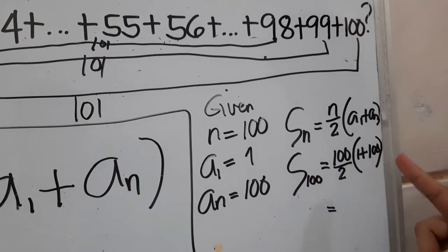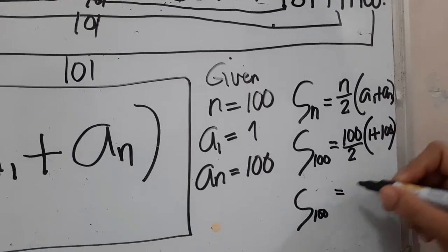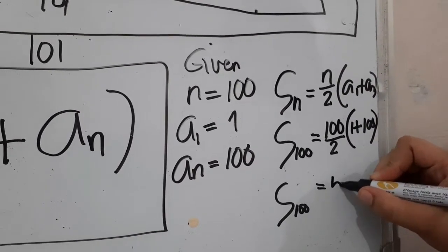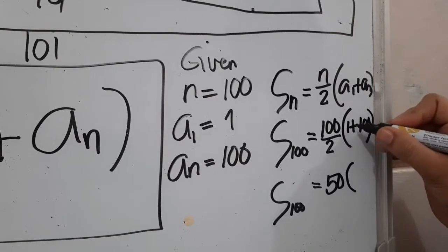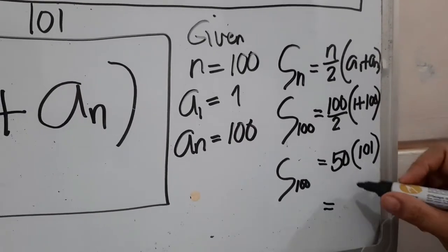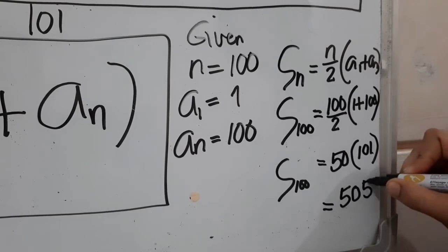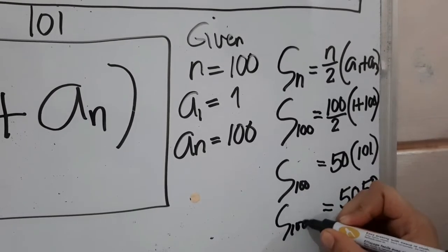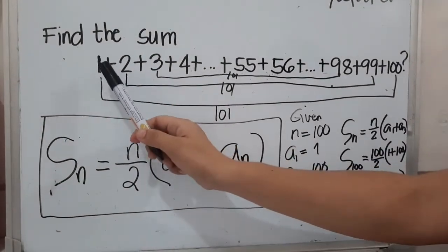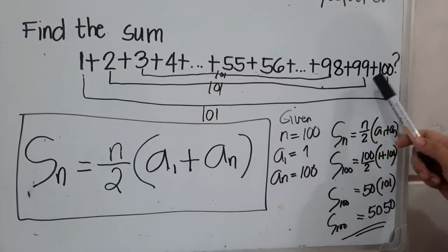Applying PEMDAS, we simplify inside the parentheses first. The sum of 100 terms equals 100 divided by 2, which is 50, multiplied by 1 plus 100, which is 101. So we multiply 50 times 101, which equals 5,050. Therefore, 5,050 is the sum of the arithmetic sequence 1 plus 2 plus 3 plus dot dot dot plus 98 plus 99 plus 100.